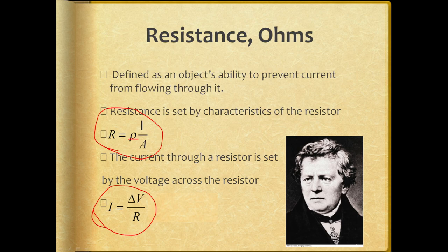Our next formula, I equals delta V over R, is a formula that ties resistance, current, and voltage together as the three primary measurements of what a circuit is doing. Voltage pushes current through a circuit — specifically, the voltage pushes current through the parts of a circuit that have resistance. The battery pushes current through the light bulb, and that's what powers the light bulb. To have a circuit, you need voltage that pushes a current, and it has to push the current through something, and whatever that something is, it will naturally have some resistance to it.